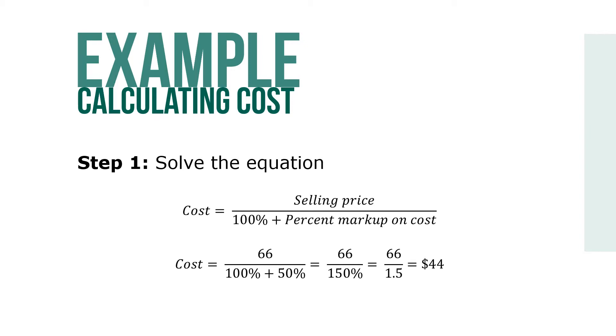Solve for the equation cost equals selling price over 100% plus percent markup based on cost. So cost equals 66 over 100% plus 50%, or 66 over 150%, which equals 66 over 1.5 to give us a cost of $44.